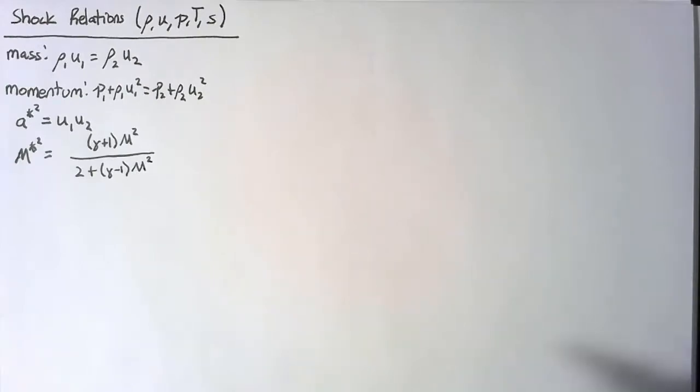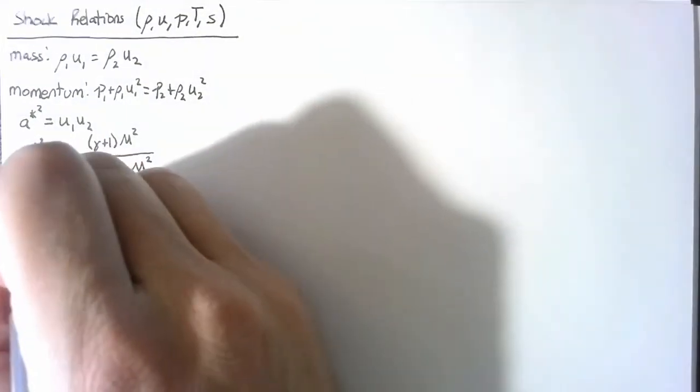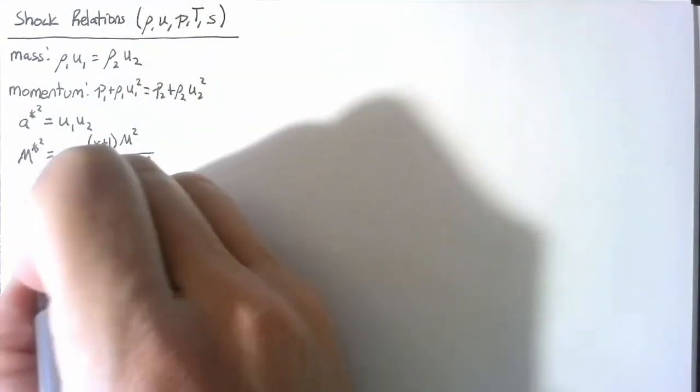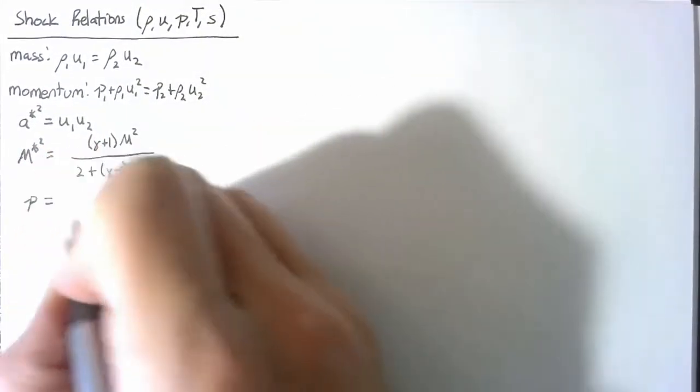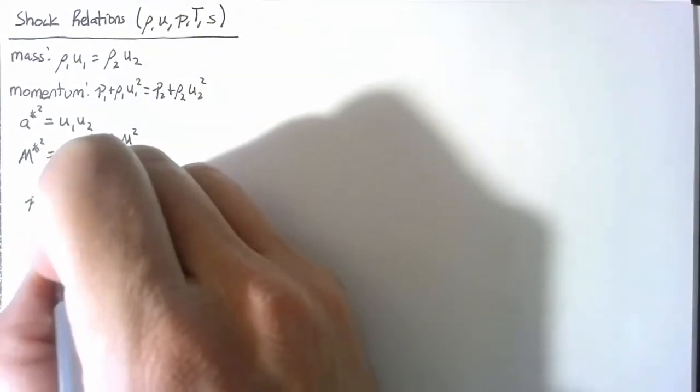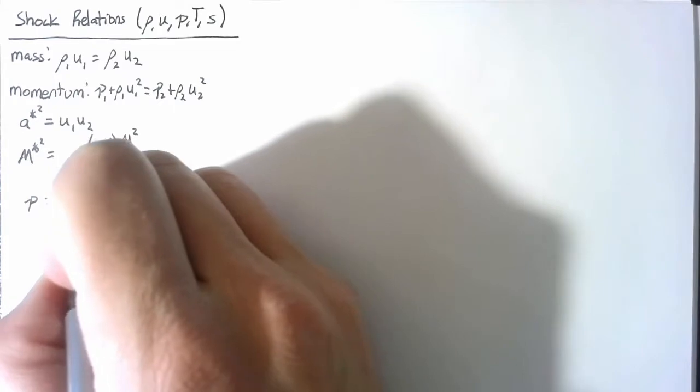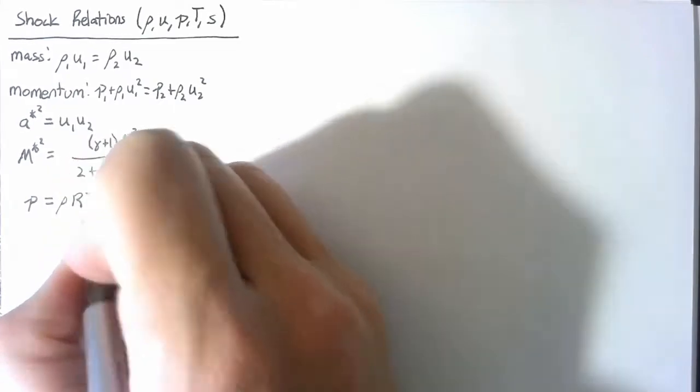And lastly, we're also going to be using the ideal gas equation: p is equal to ρ times R times T.